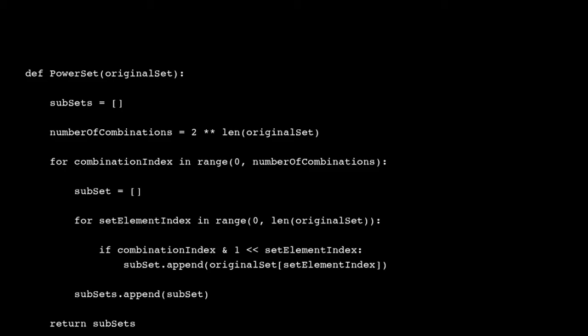Hey guys, it's Quinston and today we are going to talk about the power set. So the way the power set works is basically it generates subsets — it takes all of the subsets of a particular set and clubs them into one giant set. Let's take an example of what I mean by that.